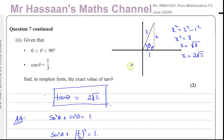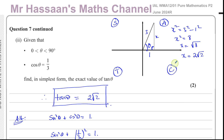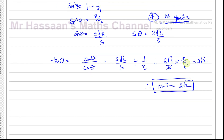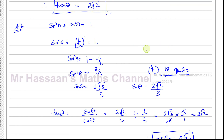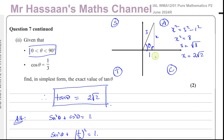Now it could have been that the angle was in another quadrant. In the second quadrant only sine is positive, meaning tan and cosine would be negative. In the third quadrant only tan is positive. In the fourth quadrant only cosine is positive. So you need to be careful about which quadrant you're in when deciding the sign of your answer — that's what determines whether you take the positive or negative square root.